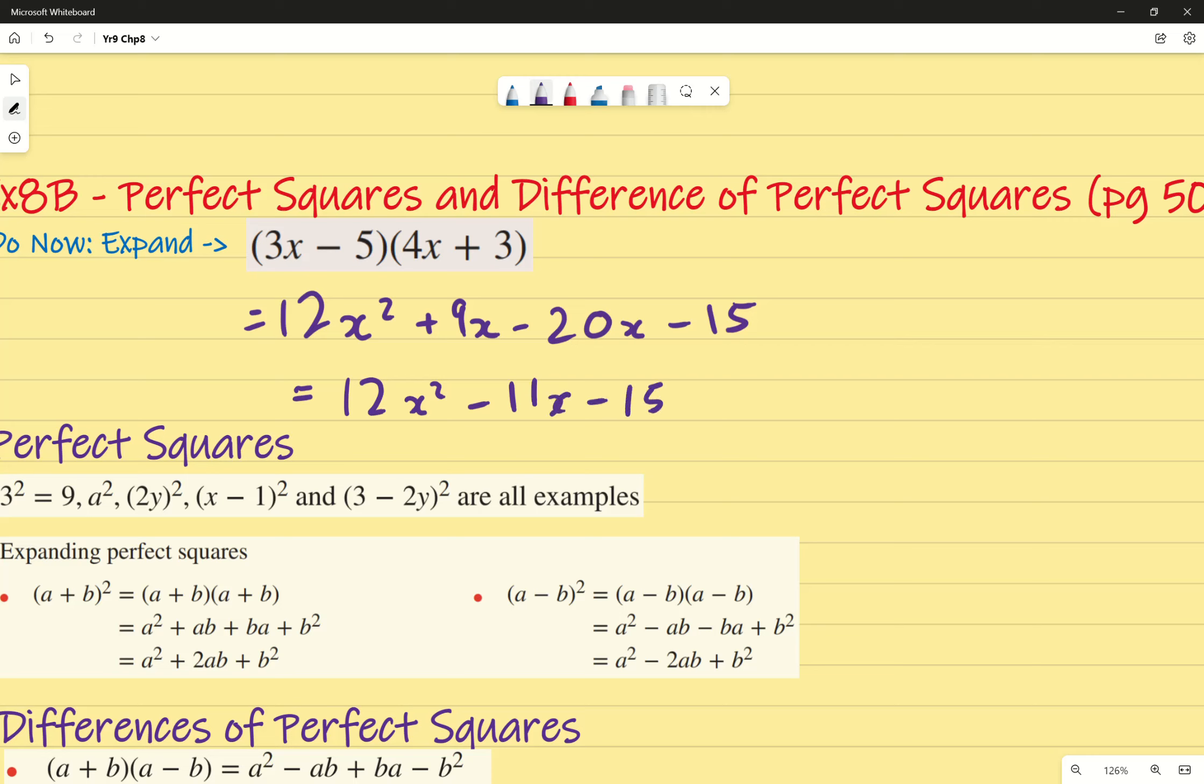I simplify that to get 12x² - 11x - 15. Now in this circumstance, there isn't really a number that we can easily factorize out. There's no all even numbers or anything like that. But if you are presented with something where they're all even numbers and you can simplify by factorizing, you should do that. In this circumstance, no need to do so. We'll go through it later on anyway.